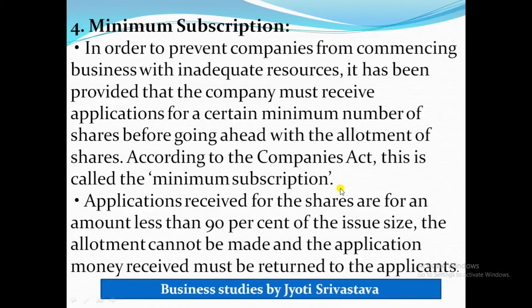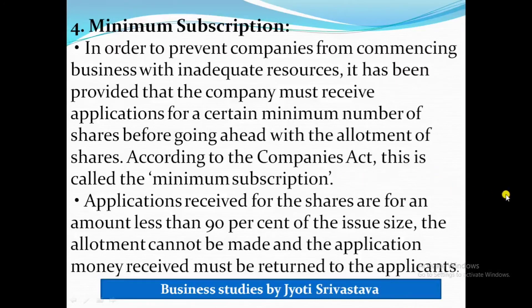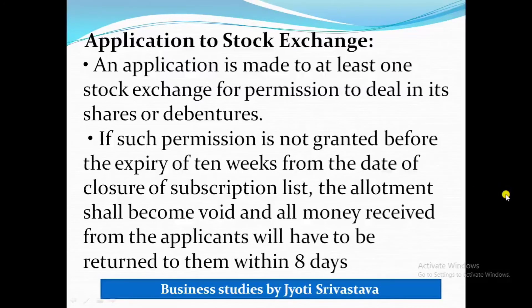After shares are allotted, investors A, B, C, D, E may later want to sell their shares to each other or to new investors. Suppose investor A wants to sell some shares to B, or B wants to sell to someone else. So it is possible for shareholders to buy and sell shares among themselves. For this, a platform is needed where sellers and buyers can meet — similar to OLX, where a seller and buyer meet on one platform to buy and sell second-hand goods.